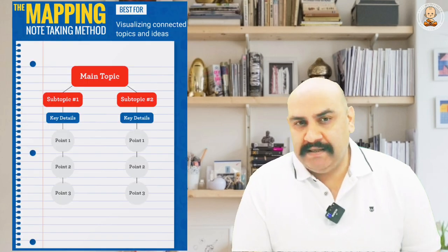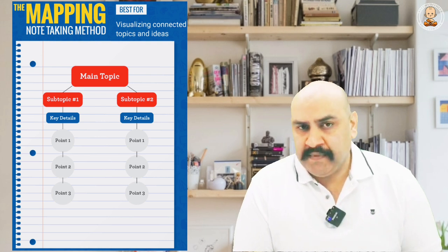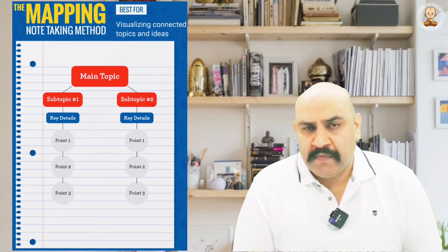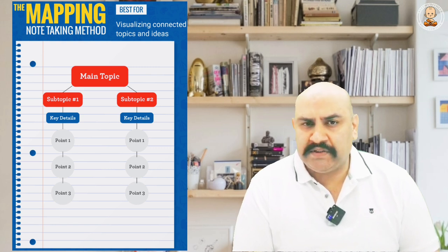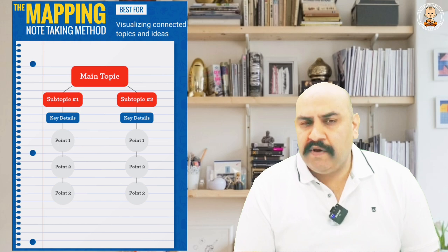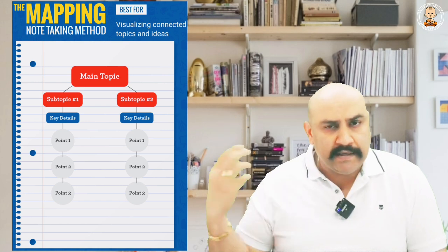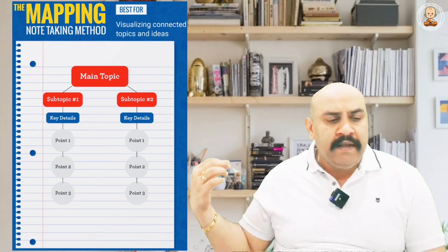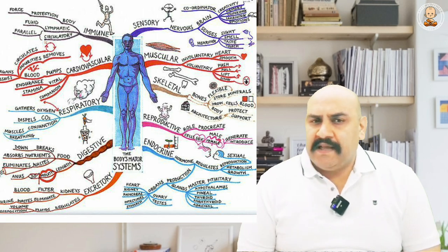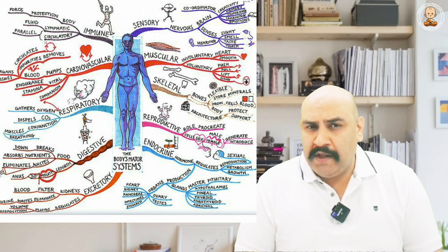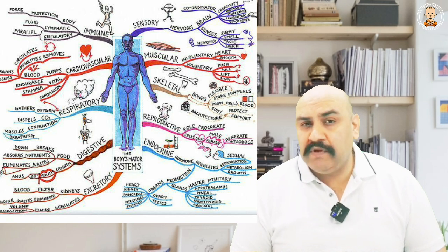The second method is the mapping method. This method is more useful for those who are more visual compared to text content. It gives a graphical representation of your lecture content. The main idea is placed at the center, then branched into sub-topics and key details, point by point. For example, this can be applied to human body anatomy, showing different related terms — helpful for easy visualization.